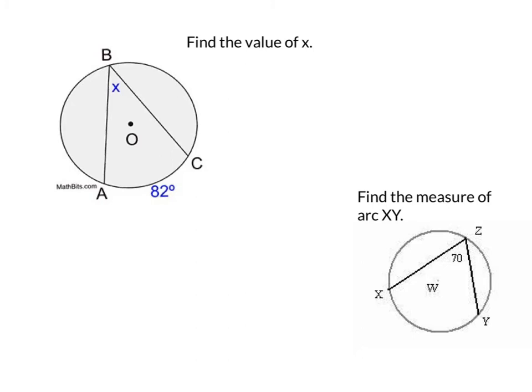So if we look at our top circle here, we have to find the value of x. That is an inscribed angle. And the intercepted arc measures 82 degrees. So we know that arc AC equals 82. And so we know that the measure of angle ABC is going to be half of that, half of 82. And again, if you cut 82 in half, you get 41 degrees.